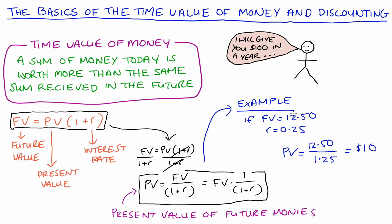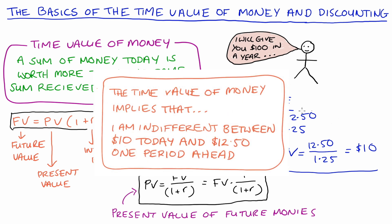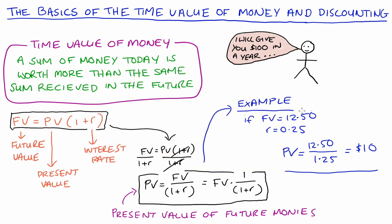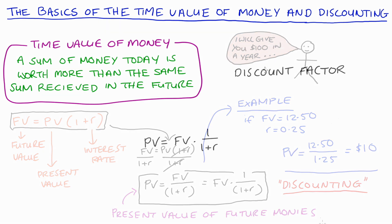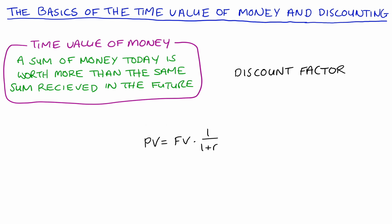We're understanding how to value a payment given in the future given the time value of money. This implies that I would be indifferent between receiving ten dollars today and twelve dollars fifty one period ahead. Importantly, when we find the present value of some future amount, we often talk about discounting future values back to their present values — that's the language you'll hear around this sort of activity.